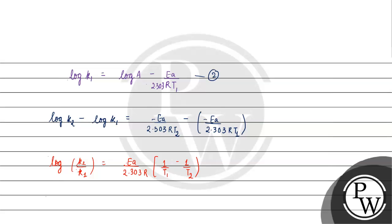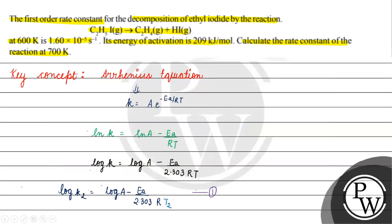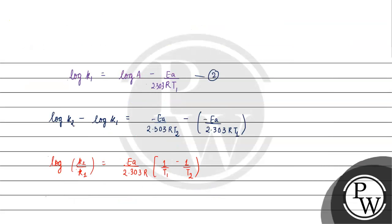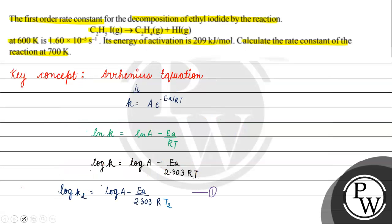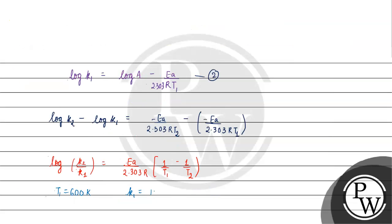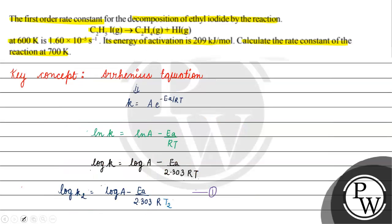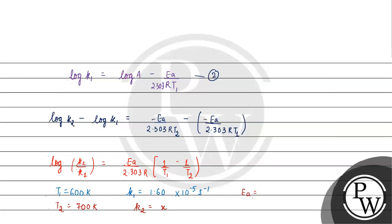Now we assign values. T1 is 600 Kelvin and k1 is 1.60 into 10 raised to the power minus 5 per second. T2 is 700 Kelvin and k2 is to be found, which we take as x. The energy of activation Ea is 209 kilojoule per mole.